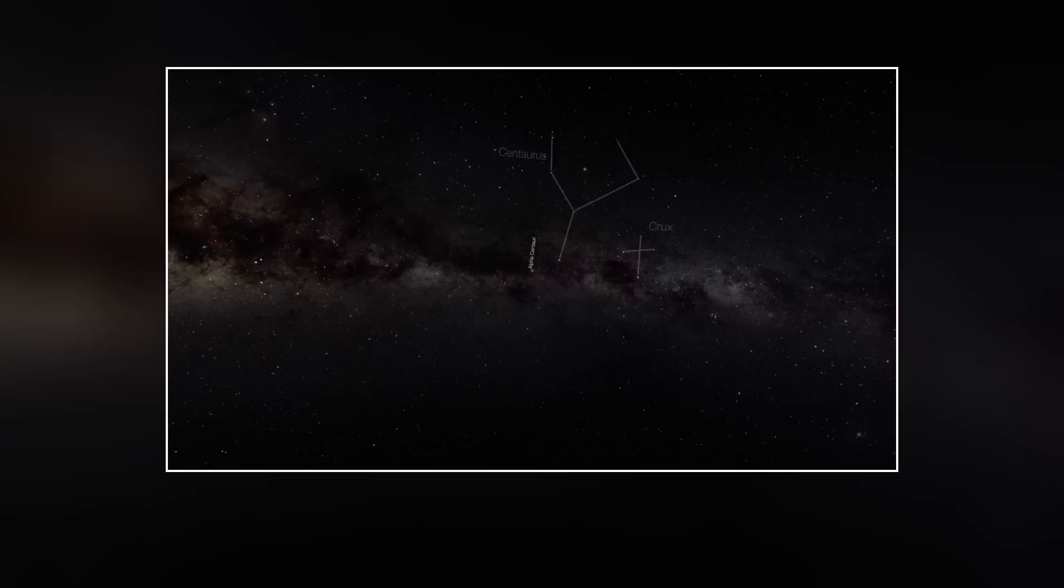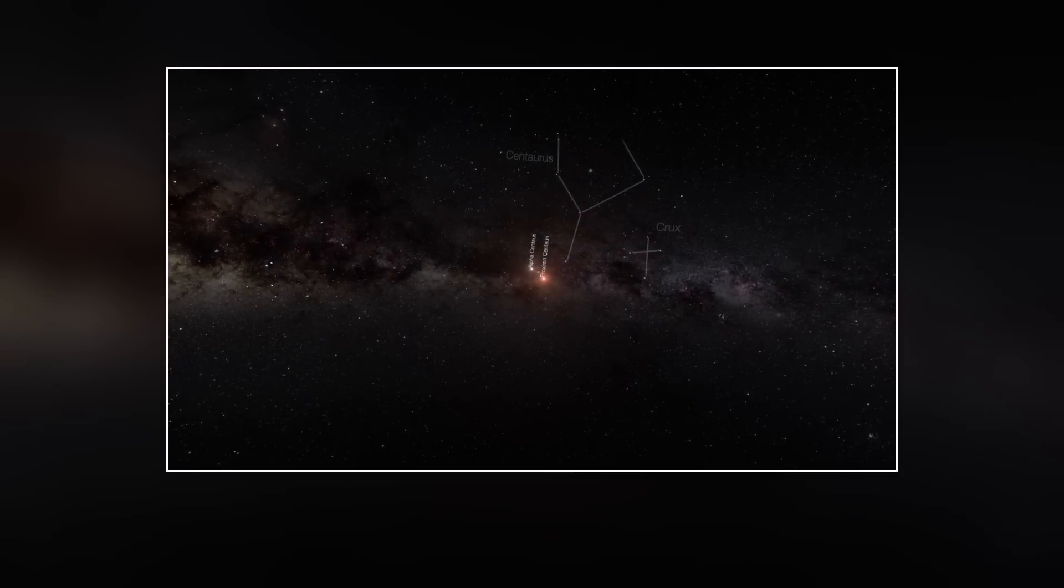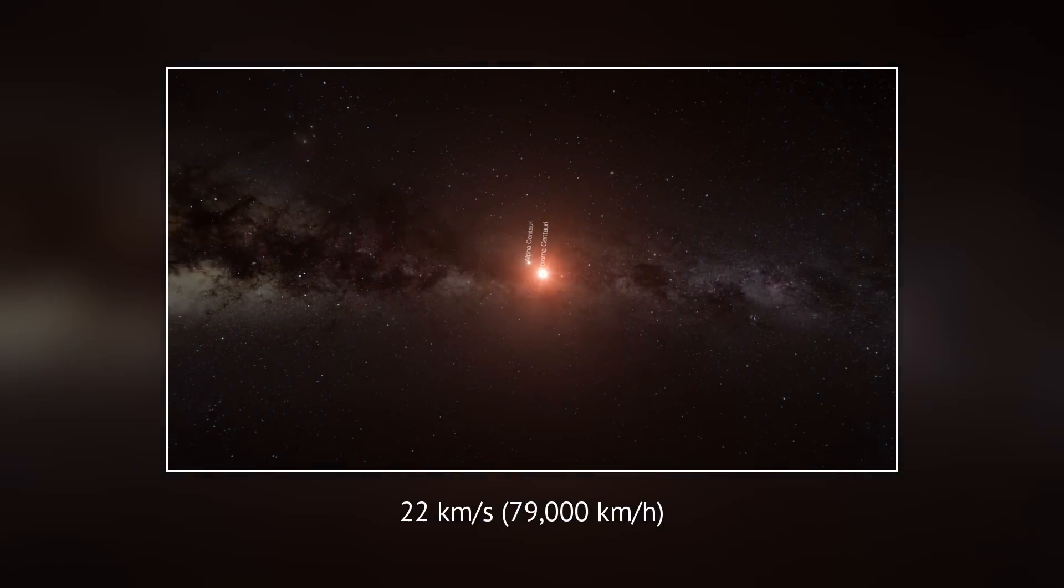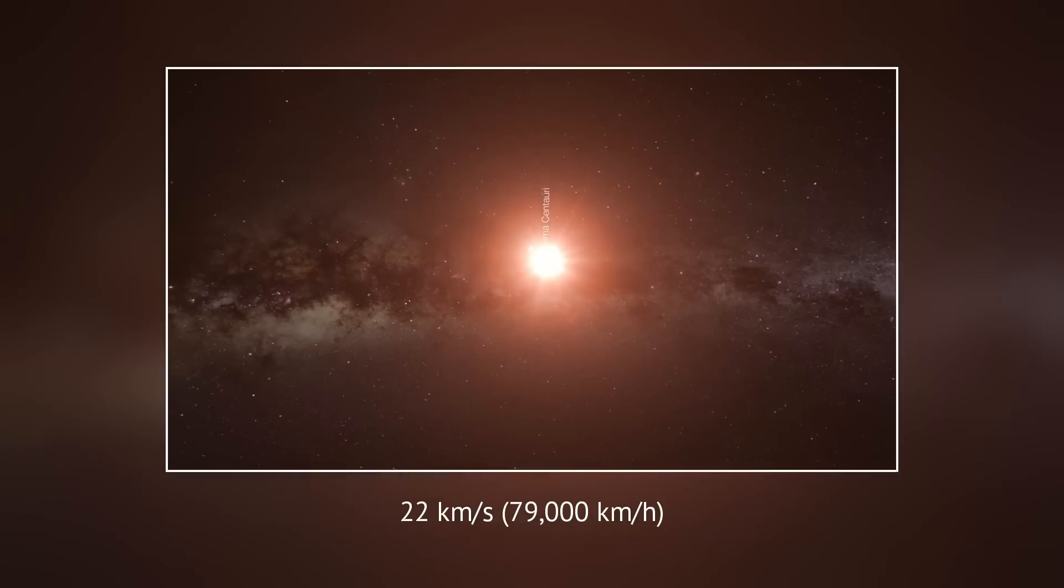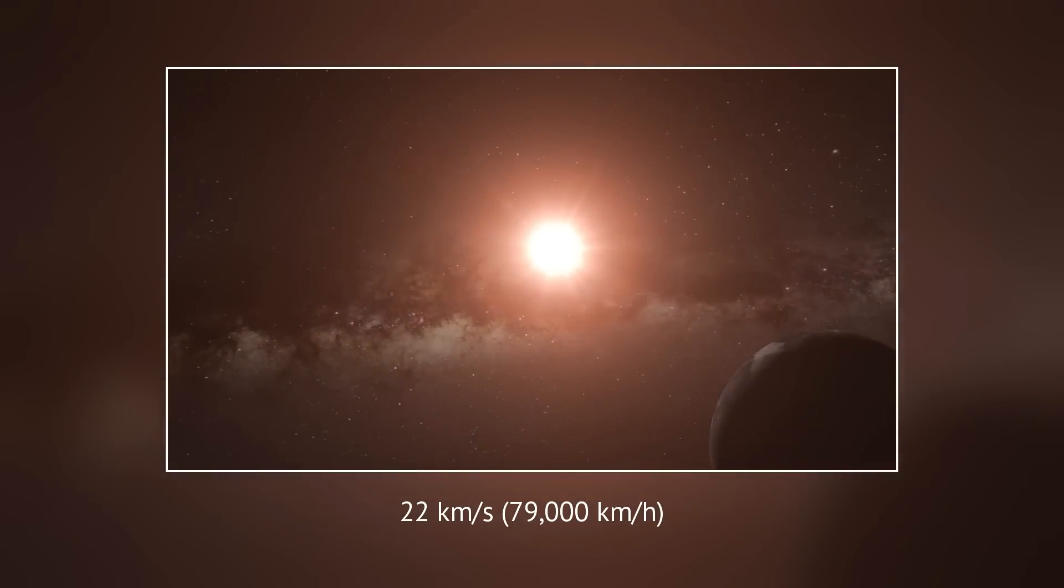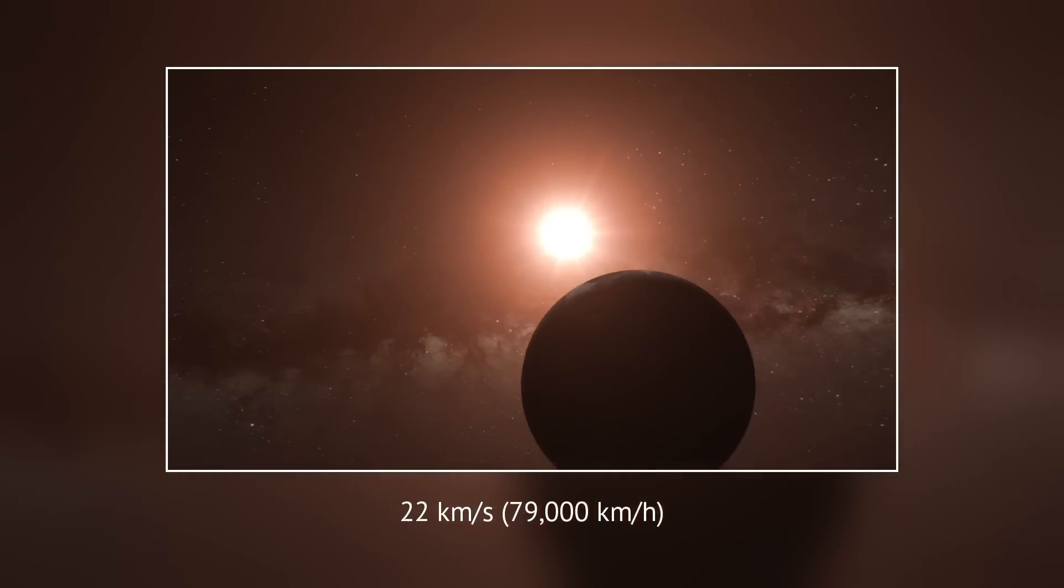This entire system is moving toward us at a speed of 22 kilometers per second, or about 79,000 kilometers per hour, making it an ideal subject for studying how material travels between solar systems.